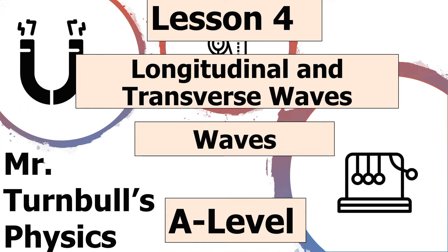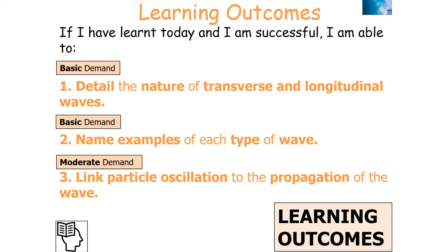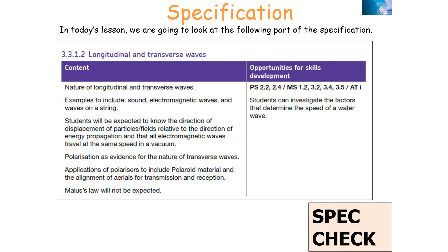Hello and welcome to this lesson on longitudinal and transverse waves, which is part of the wave topic for AQA A-level physics. In today's lesson, we're going to be looking at how to describe the nature of longitudinal and transverse waves. If we've been successful, we should be able to detail the nature of transverse and longitudinal waves, name examples of each type, and link particle oscillation to wave propagation. We'll be covering specification 3.3.1.2: longitudinal and transverse waves.